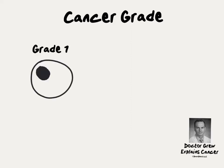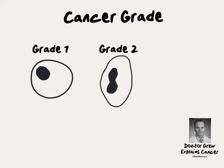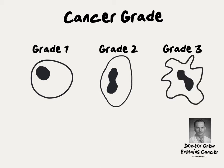Grade 1 tumors are the least aggressive and they look a lot like the cells from which they arose. Grade 2 tumors are more aggressive than grade 1 and under the microscope they take on odd appearing shapes, indicating that they're beginning to grow fast. Grade 3 tumors are the most aggressive and they have acquired so many mutations they look almost nothing like the cell from which they arose.